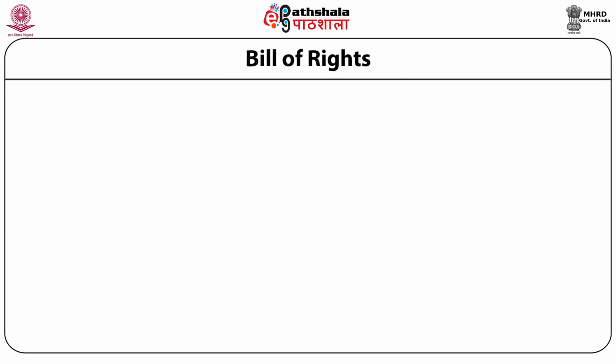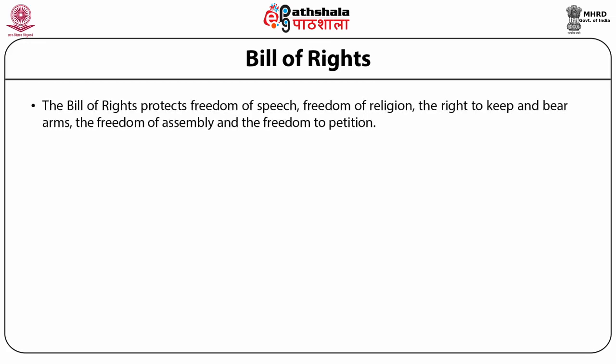The first ten amendments to the Constitution are collectively known as the Bill of Rights, which came into effect on December 15, 1791. They limit the powers of the federal government and protect the rights of all citizens, residents, and visitors on American territory. The Bill of Rights protects freedom of speech, freedom of religion, the right to keep and bear arms, the freedom of assembly, and the freedom to petition.